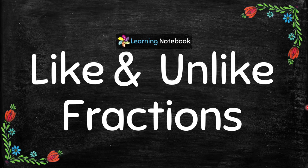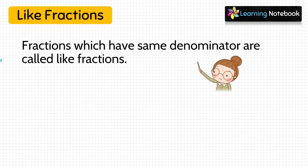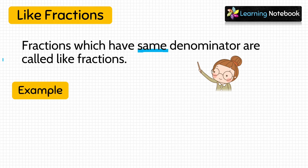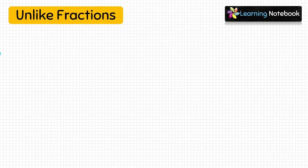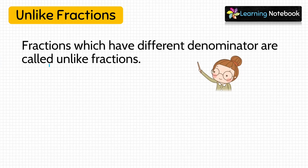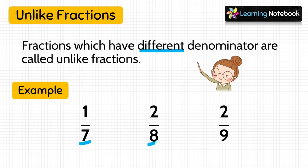Next, like and unlike fractions. Fractions which have the same denominator are called like fractions. For example, 1 by 7, 2 by 7, and 5 by 7 are like fractions because they have the same denominator 7. Fractions which have different denominators are called unlike fractions. For example, 1 by 7, 2 by 8, and 2 by 9 are unlike fractions because they have different denominators 7, 8, and 9.